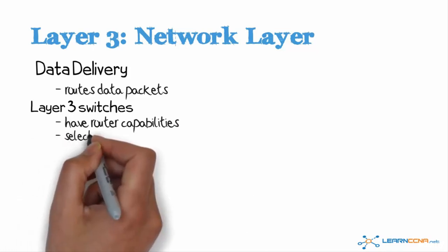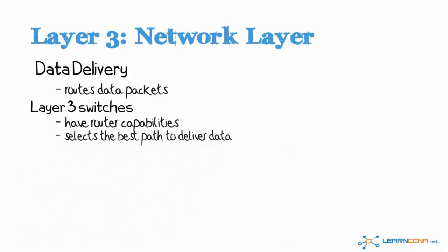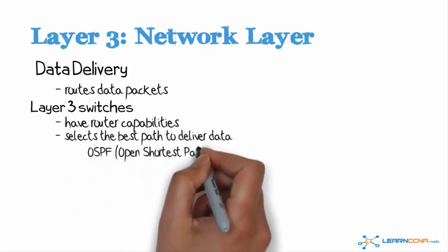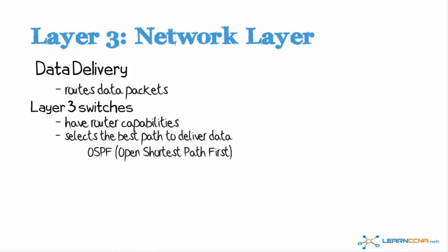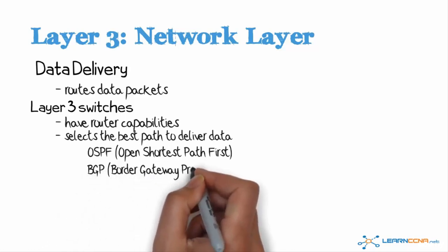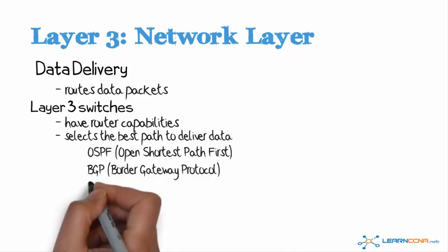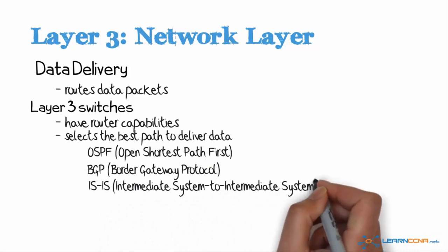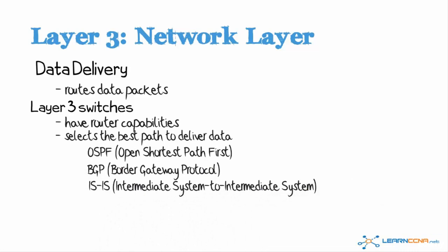Routers, or layer 3 devices, choose or select the best path to deliver data based on the information provided by routing protocols such as OSPF, or Open Shortest Path First, or BGP, or Border Gateway Protocol, or ISIS, or Intermediate System to Intermediate System. Those are three examples of routing protocols you may encounter. They use the logical addressing scheme of IPv4 to determine the best path.